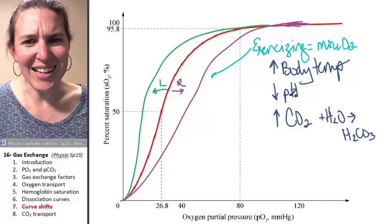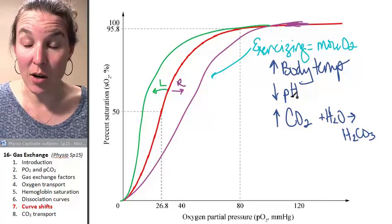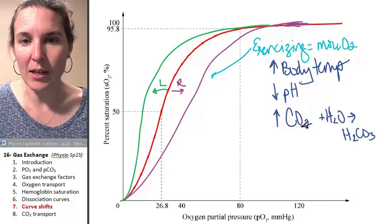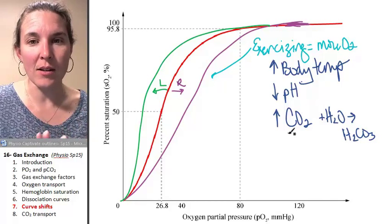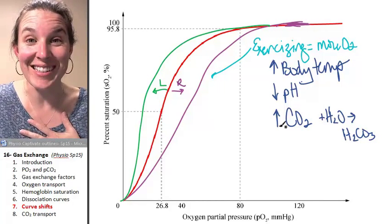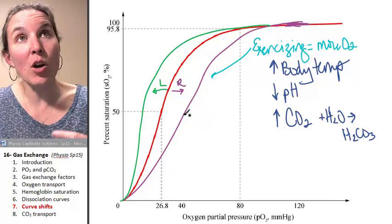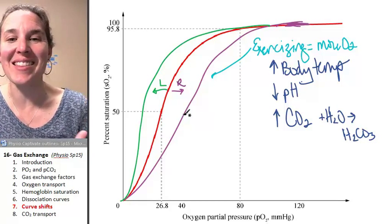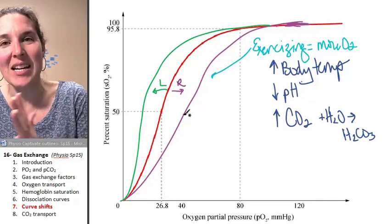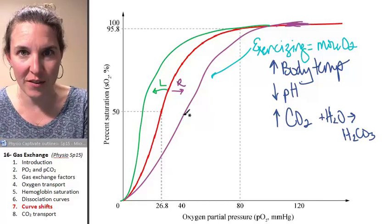We increased carbon dioxide. That's actually how we ended up decreasing our pH, because we increased carbon dioxide. All of these are going to happen when you're exercising, and all of them result in hemoglobin changing such that the percent saturation curve shifts to the right.